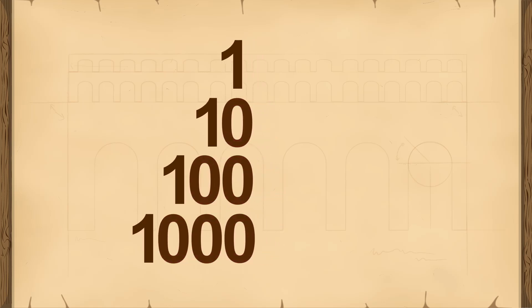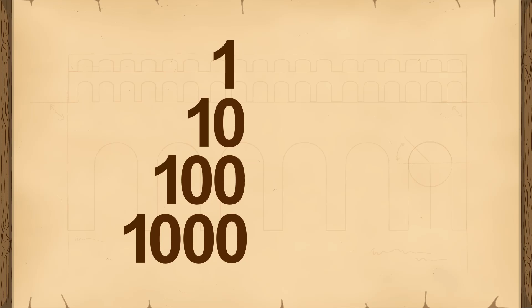The Roman number system is an example of sign value notation. Sign value notations do not require a symbol for zero since different quantities such as 1, 10, 100, and 1000 each have unique symbols whose value does not depend on their position in the number.